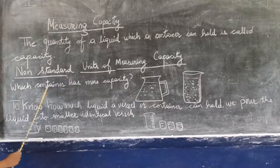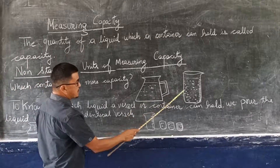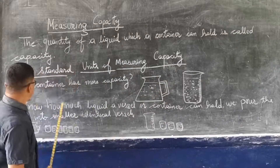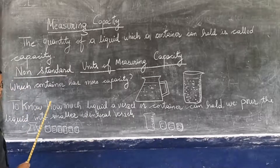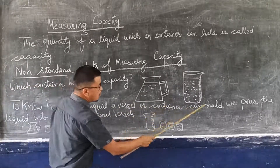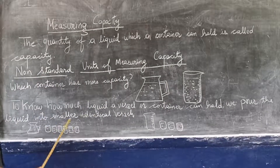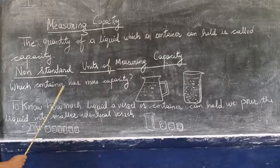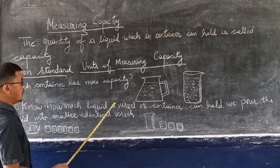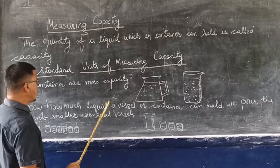Which container has more capacity? Look here - here is a jug and a glass, both filled with water. To know how much liquid a vessel or container can hold, we pour the liquid into smaller vessels so that we can tell which container has got more liquid inside.